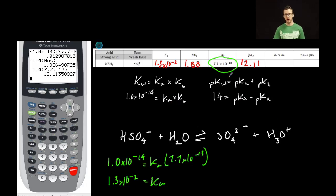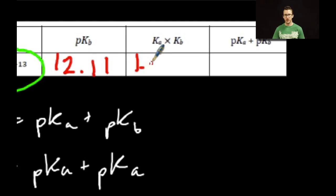Next, to determine my pKb, I'm just going to take the negative log of my Kb value. 7.7, second E, negative 13. We get 12.11. Now, what is my value when I multiply Ka times Kb, and what is my value when I add pKa plus pKb?